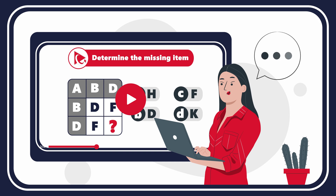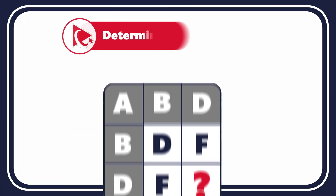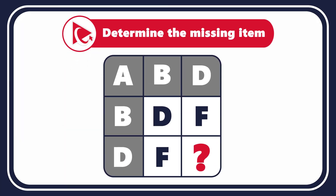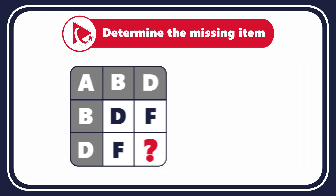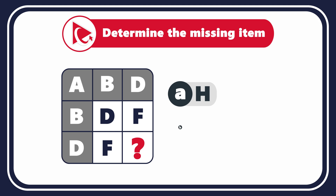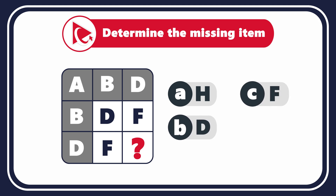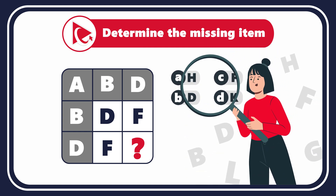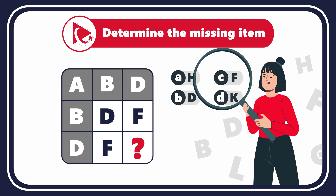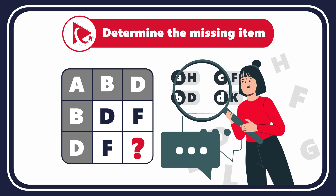I'll be checking there to provide my thoughts and the correct answer. You are presented with a three-by-three matrix containing letters. The letters in the first row are A, B, and D. The second row: B, D, and F. The third row: D, F, and a missing letter you need to determine from four possible choices. I have full confidence you can solve this independently — please post your answer in the comments.